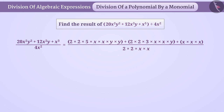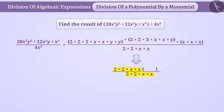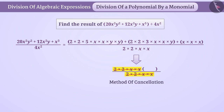Now we have to take a number common from each term of the numerator. The number must be equal to the denominator so that we can cancel it with the denominator by the method of cancellation. In this way we will take 2 multiplied by 2 multiplied by x multiplied by x common from each term in the numerator.